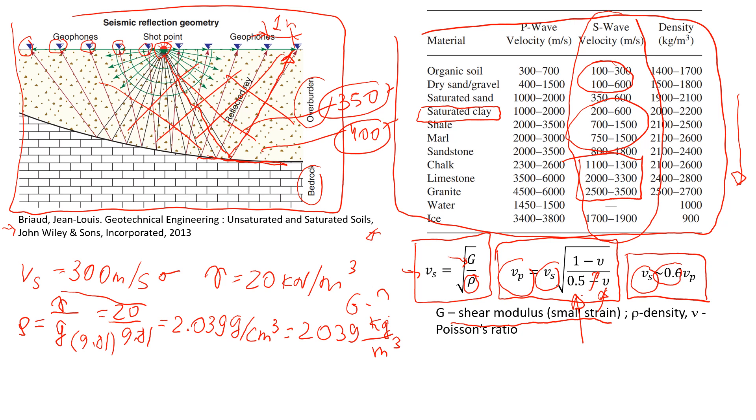So in this case, we have velocity of 300. So in this case, that would lead us to shear modulus. So we can actually write that we put in the power of 2 velocity, and this one is going to be G divided by density. And from here, we're going to say that shear modulus is velocity in the power of 2 times density.